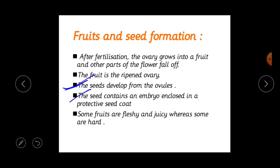The seed contains an embryo enclosed in a protective seed coat. Some fruits are fleshy and juicy — such as mango and oranges — whereas some are hard, like almond and walnut. These are examples of fruits. The fruits and seeds are formed after fertilization, with seeds developing from the ovules.